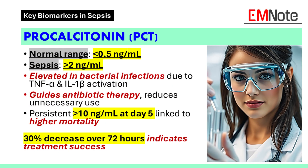Procalcitonin is a peptide precursor of the hormone calcitonin. In healthy adults, its levels are typically less than 0.1 nanograms per milliliter. Levels above 2 nanograms per milliliter are considered diagnostically significant, while persistent elevation above 10 nanograms per milliliter at day 5 correlates with increased mortality.